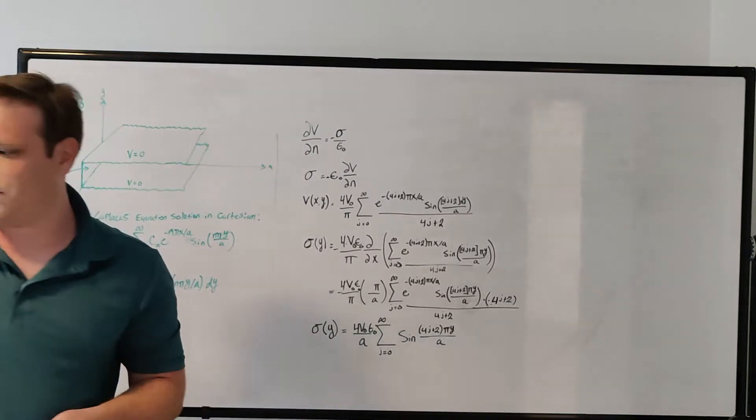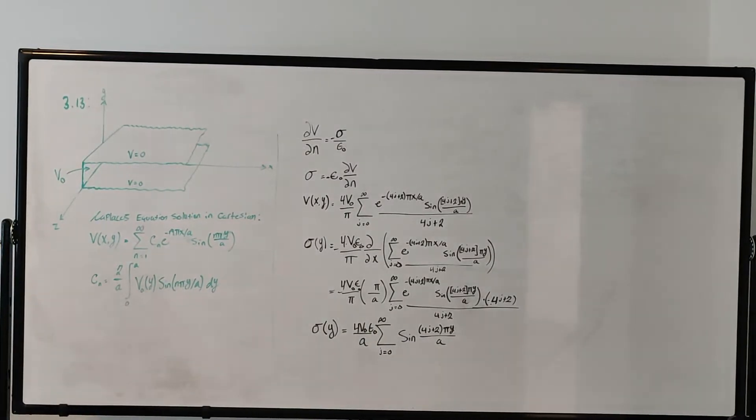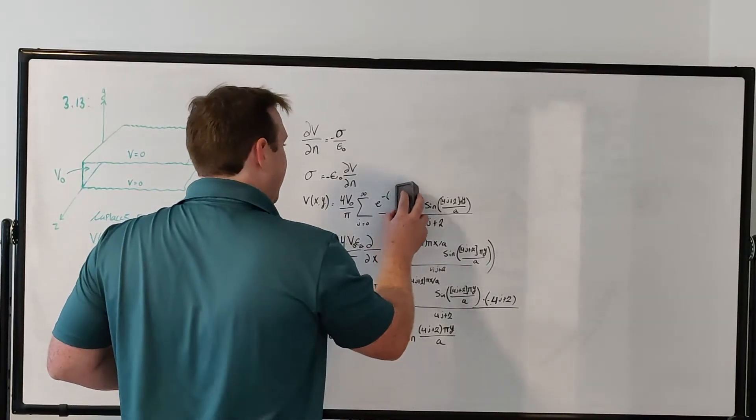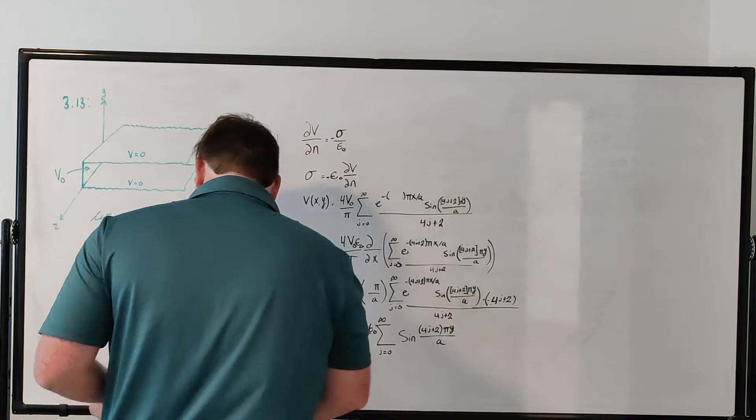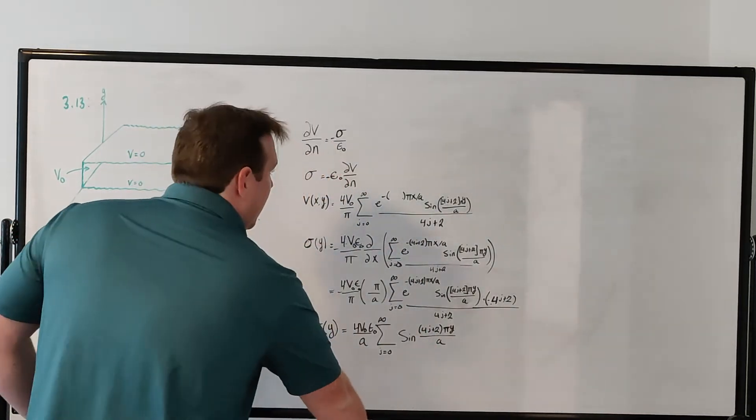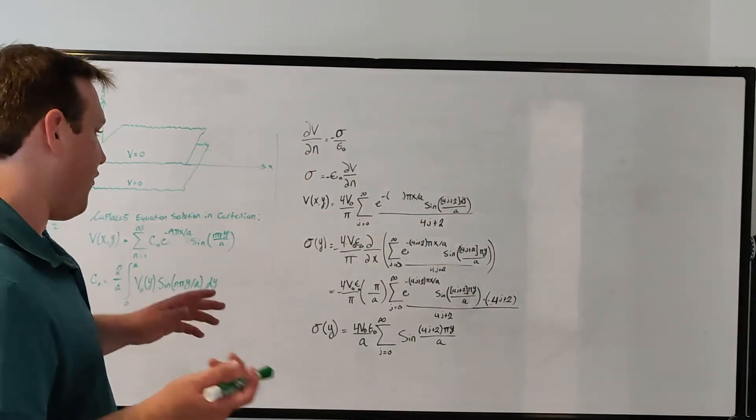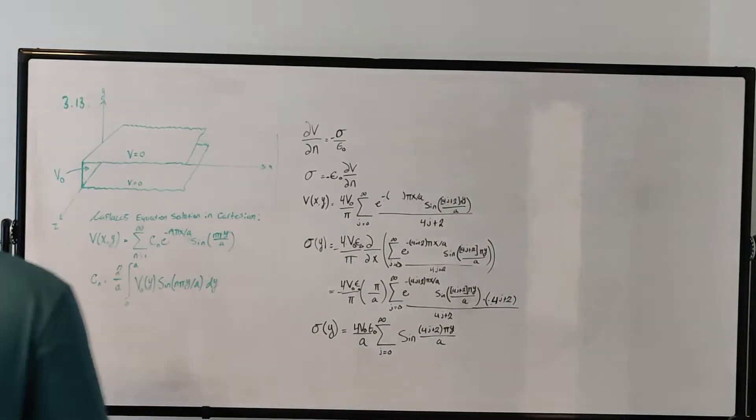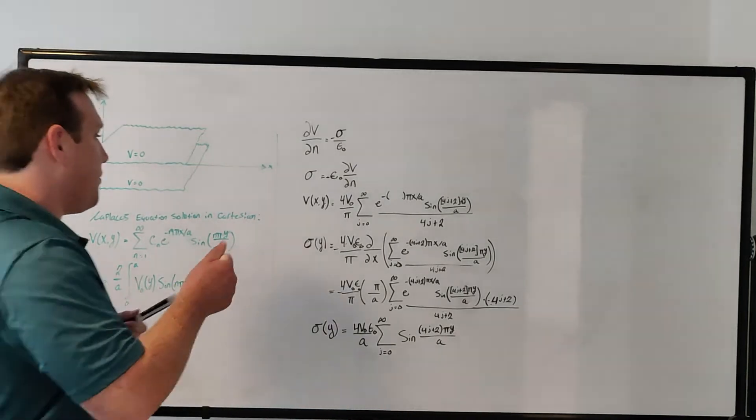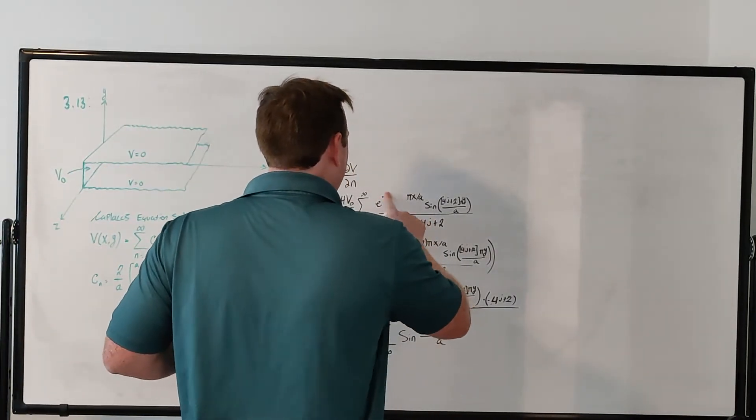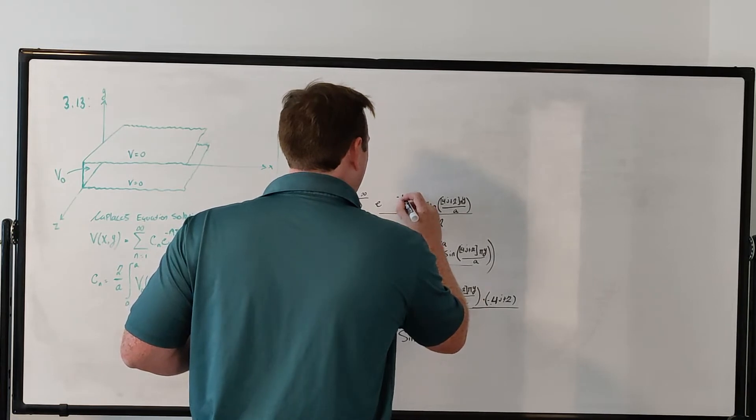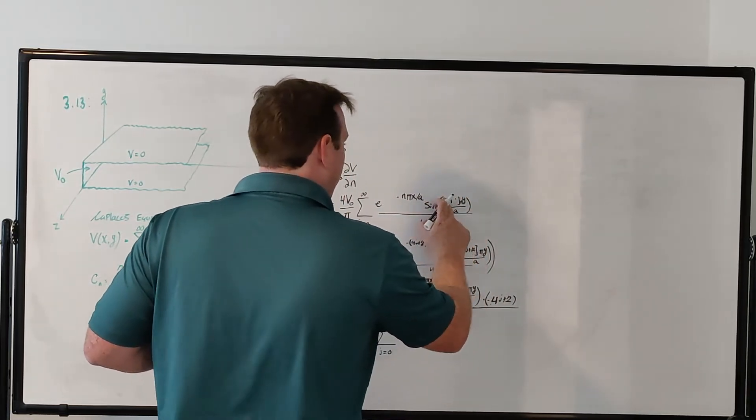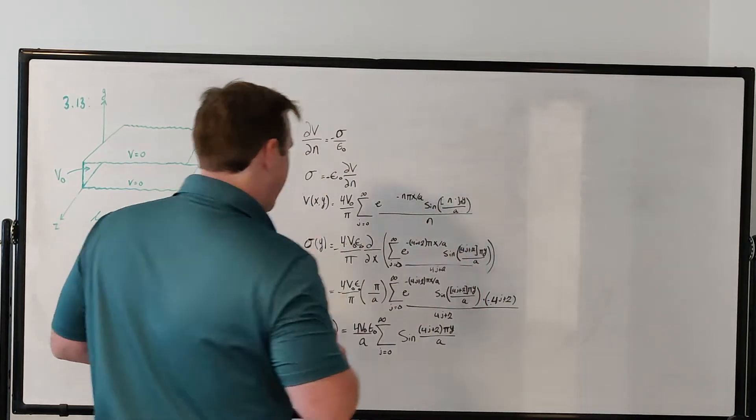Sorry, actually, this should be n. So everywhere I accidentally got this from another problem, I had a 4j plus 2, that's actually from the previous problem. This should be n. So anywhere you see 4j plus 2, just replace that with n. I'm going to try to do it as I go.